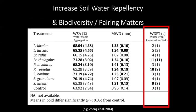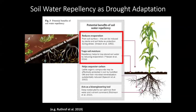Mycorrhizae are also known to increase soil water repellency. You can see the control on the bottom and a whole bunch of different mycorrhizal species performing differently — again, biodiversity matters. Soil water repellency can be a problem with water infiltration, but it can also be a drought adaptation. With mycorrhizae, we're talking about soil water repellency in the ground — once water gets there, it can act as a drought adaptation to reduce evaporation and trap soil moisture for the plant's benefit.